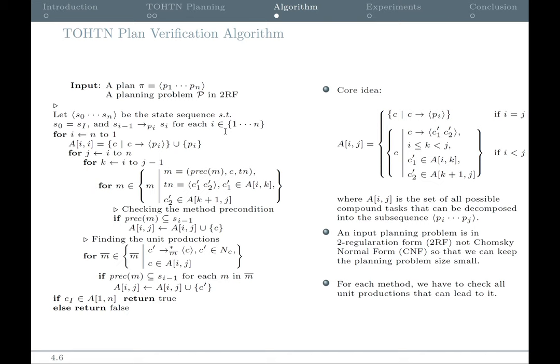The reason for using two-regulation form is that we can keep the size of an input planning problem small, because transforming a TO HTN planning problem into Chomsky normal form can result in the quadratic explosion of the problem size.